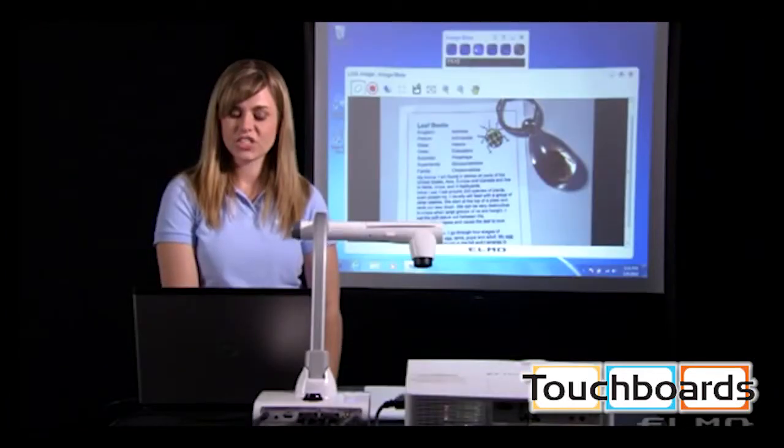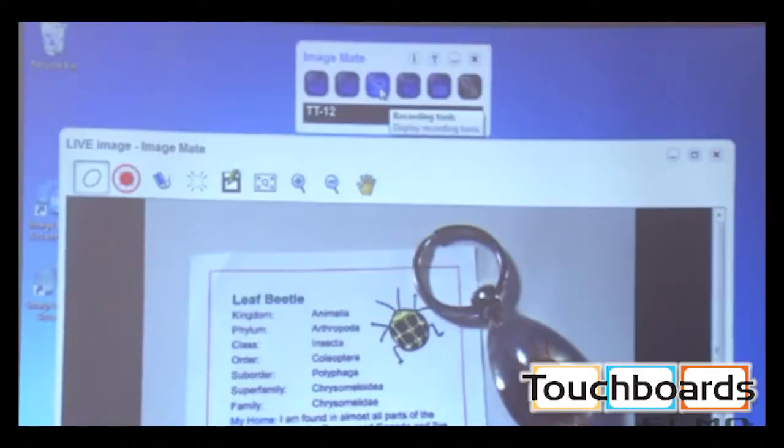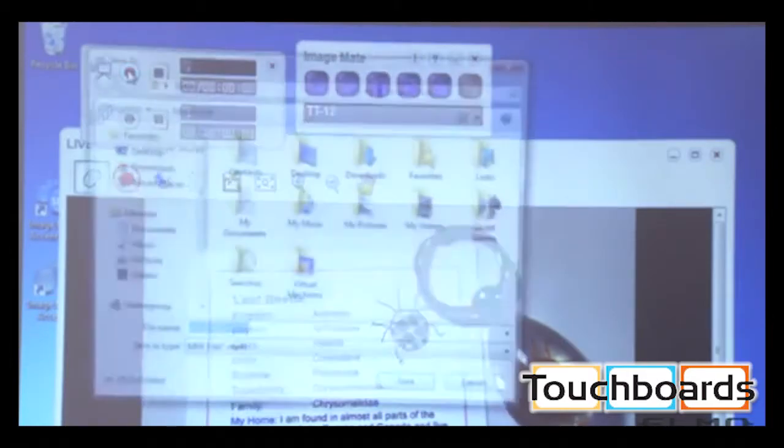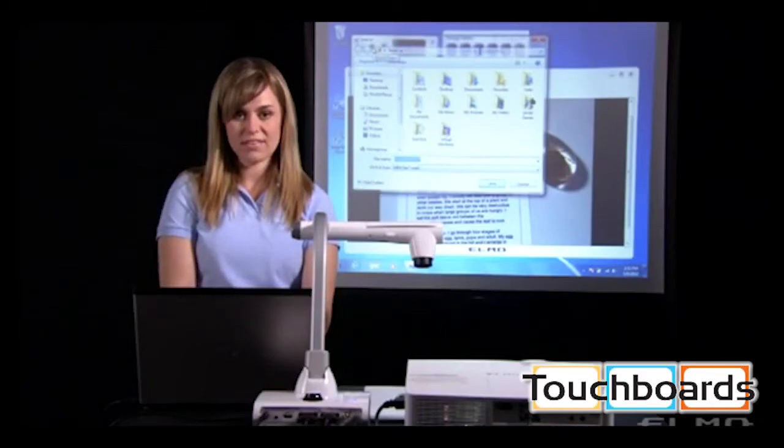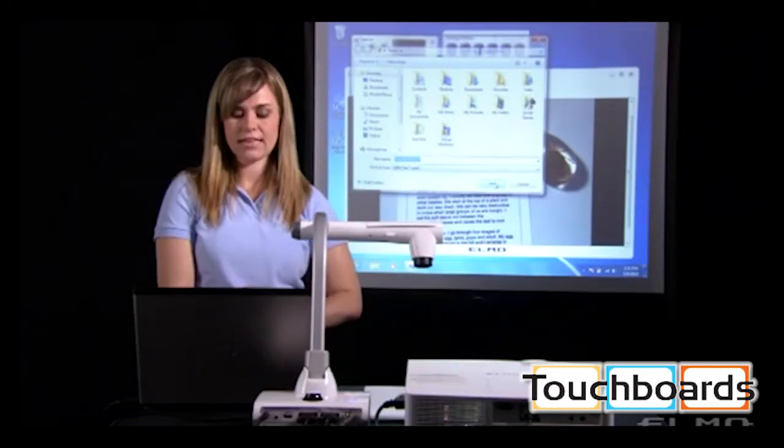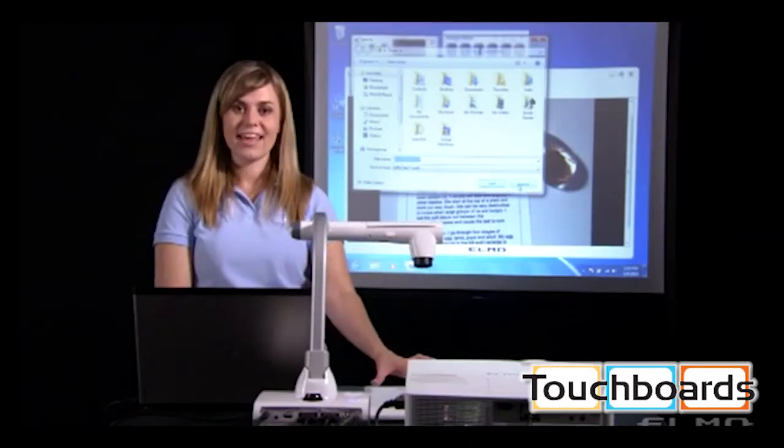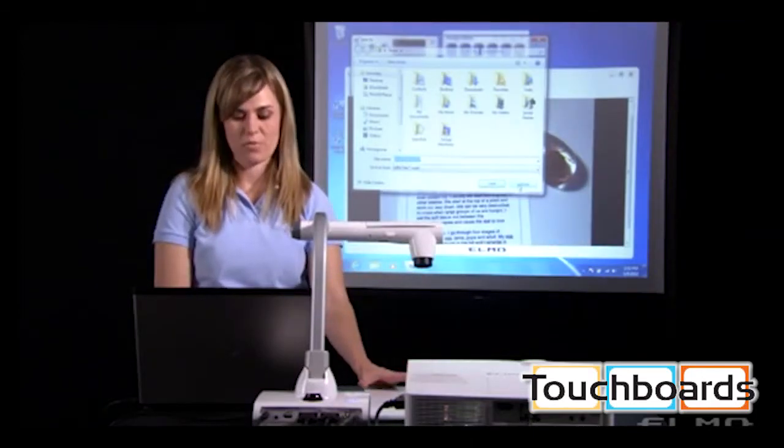Next to the capture is a video icon. When I press this, my video box comes up. The top portion is for regular video recording. So if I click on start recording, I select where I want the video to save to, and then hit save, it will start recording anything underneath the document camera.